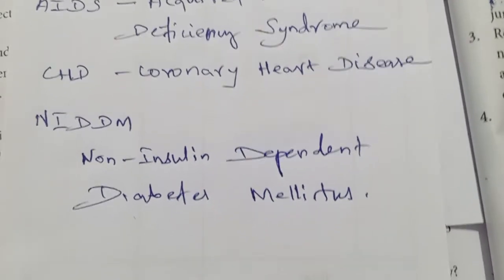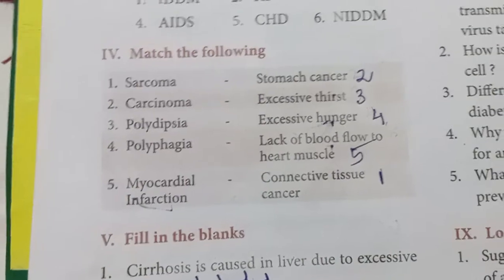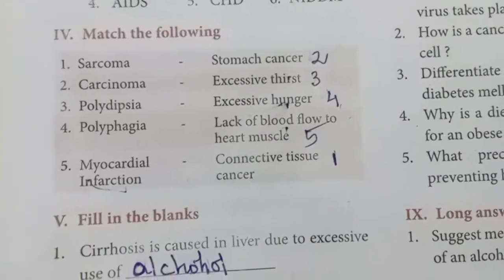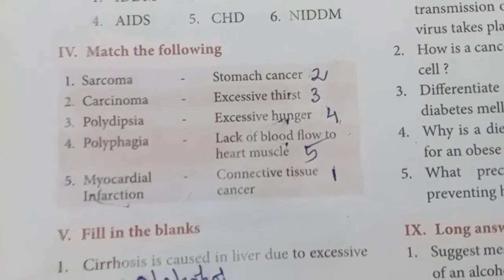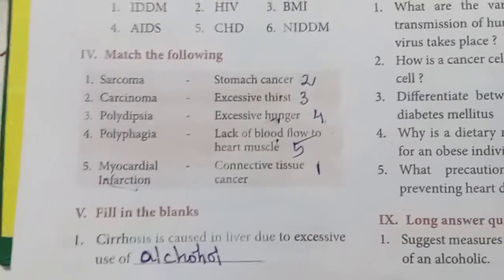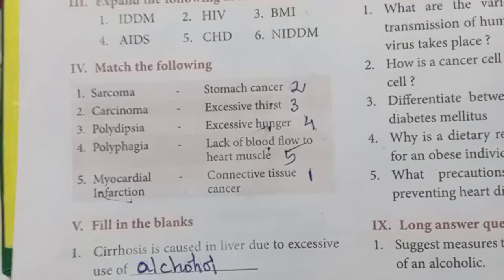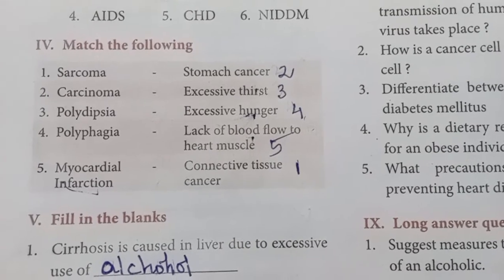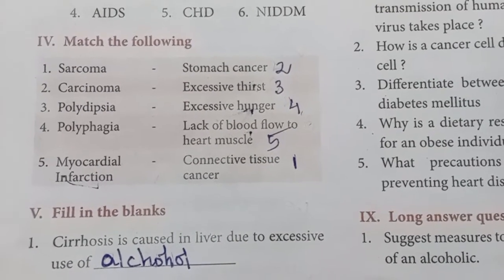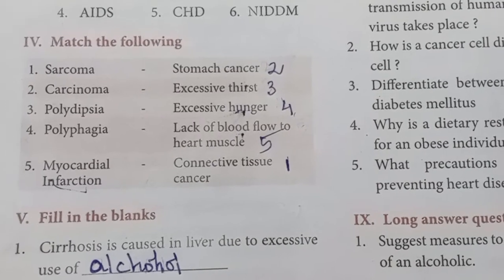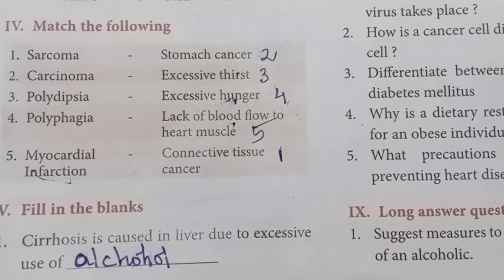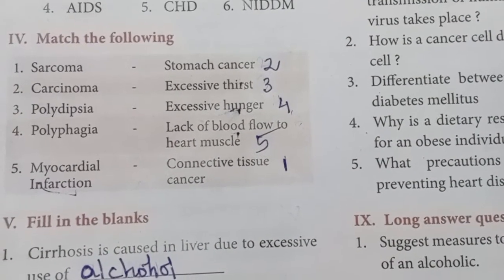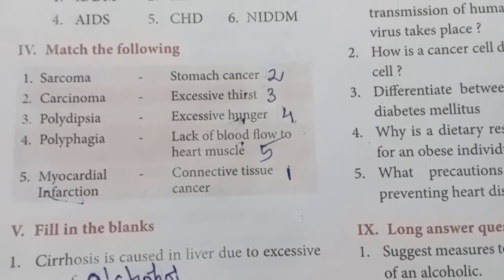Next is the Match the Following section — don't ignore it because occasionally government question papers carry Match the Following under five-mark questions. Sarcoma is connective tissue cancer. Carcinoma is stomach cancer. Polydipsia means excessive thirst — the person always wants to drink something. Polyphagia means excessive hunger — they want to eat again and again. Myocardial infarction means lack of blood flow to the heart muscles.